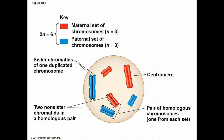How many chromatids are in this cell? Yes, there are 12 chromatids in this cell. There are 3 chromosomes in blue, which represent the half from dad, and 3 chromosomes in red, which represent the half from mom.